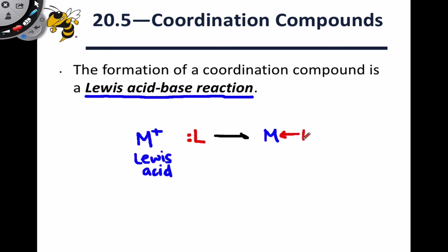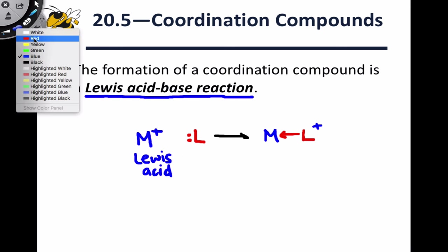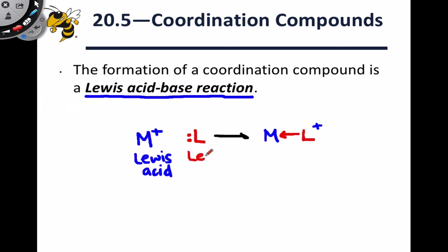...to form a coordinate covalent bond in which the new bond is composed of two electrons from the Lewis base, in this case L, and those are donated to the Lewis acid, in this case M, and the overall charge remains at plus one in this case since the ligand was neutral. So we can see that the Lewis base has donated a pair of electrons to the Lewis acid to form the resulting complex.